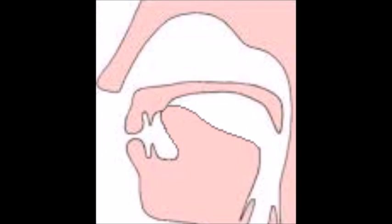Broad consonants are made with the tongue curved out and space behind, while slender consonants are made with the middle of the tongue. So even though the Gaelic alphabet has just 17 letters and only 12 consonants, each of those consonants has theoretically four different sounds.